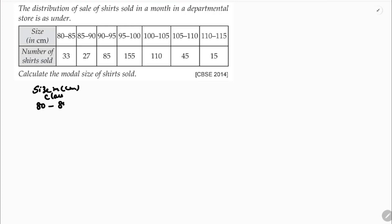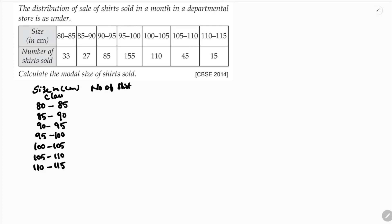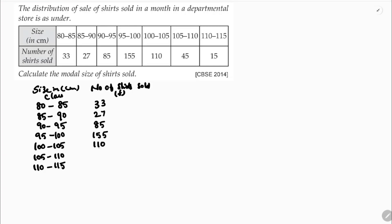The class intervals are: 80–85, 85–90, 90–95, 95–100, 100–105, 105–110, and 110–115. The corresponding frequencies (number of shirts sold) are: 33, 27, 85, 155, 110, 45, and 15.